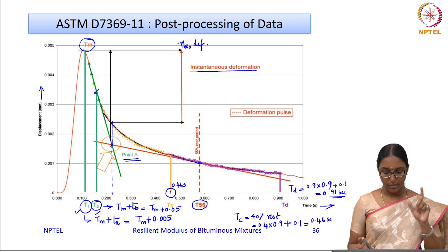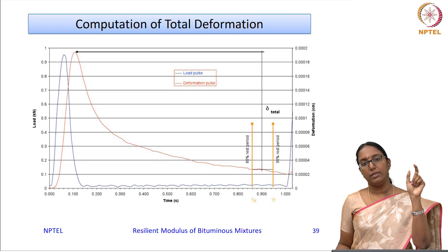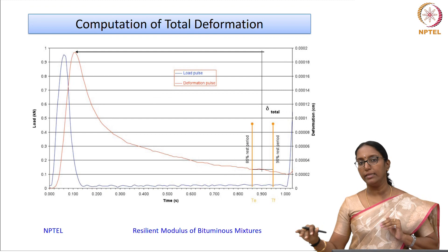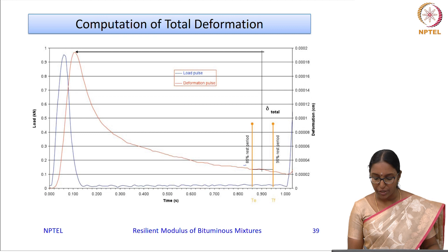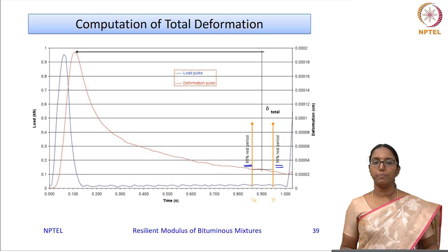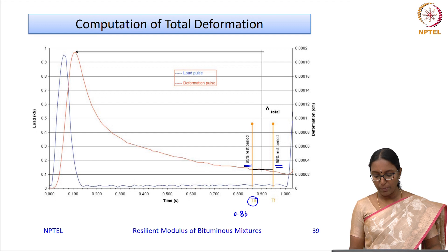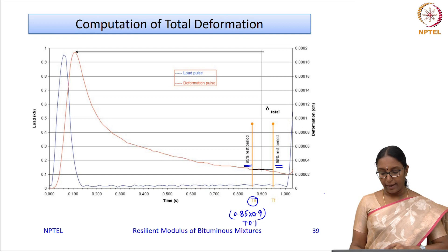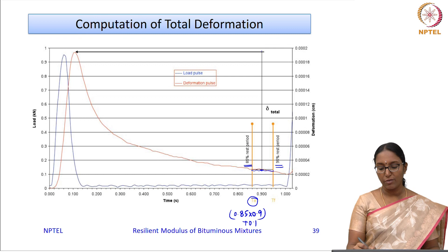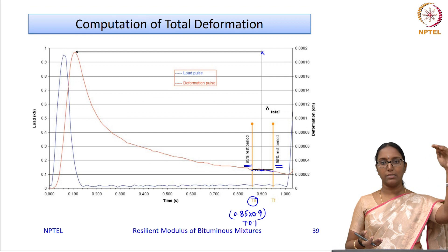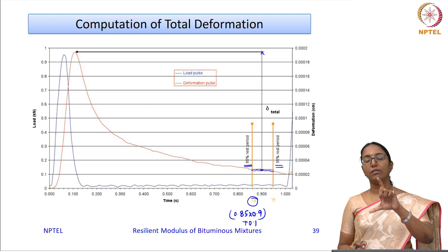For total recovery, two points toward the end of the test cycle are considered: 85 percent and 95 percent of the rest period. Deformations at these two points are found and averaged to cancel out irregularities. Subtracting this averaged deformation from the maximum deformation gives the total recoverable deformation. Thus, both instantaneous recovery and total recovery are determined.